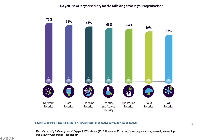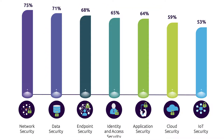Looking at the current use of AI in organizations from the same study of 850 executives: 75% of organizations use AI in their network security, 71% in data security, 59% in cloud security, and 53% in Internet of Things security. Already we see that artificial intelligence is used widely across industry.